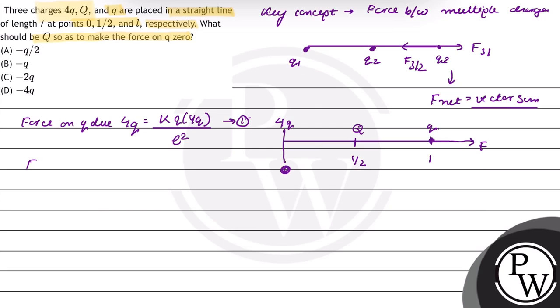Force on small q due to capital Q will be K small q capital Q upon distance between them. Distance is L by 2, so L by 2 whole square. This will be equal to 4K small q capital Q upon L square. This is equation 2.